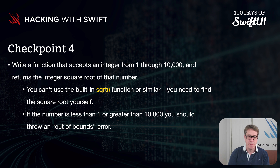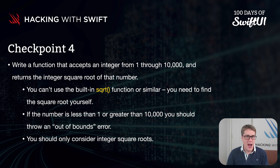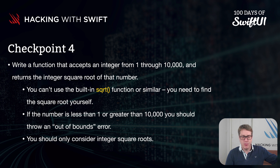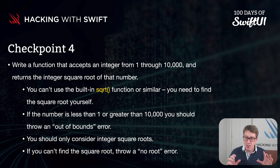Third, only consider integer square roots — don't worry about doubles. Don't worry about the square root of three being 1.732, for example. Think about one, two, three, four, five, fifty, and so forth. And finally, if you can't find the square root, throw a no-root error.